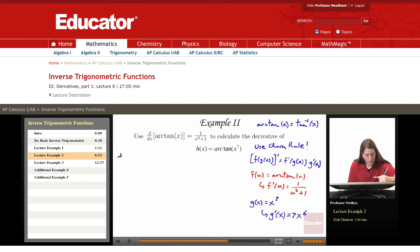We wish to differentiate arctangent of x to the 7th. The outer structure is arctangent of u. The derivative of arctangent of u is 1 over u² plus 1. In place of u, we substitute g(x), which is x to the 7th. So we get 1 over (x⁷)² plus 1.